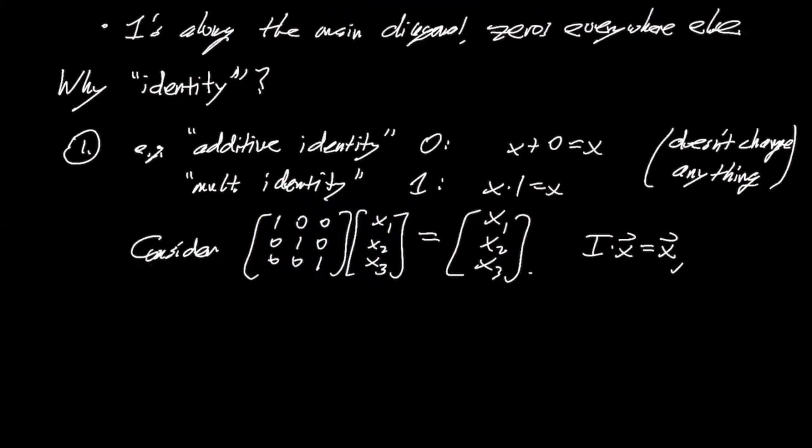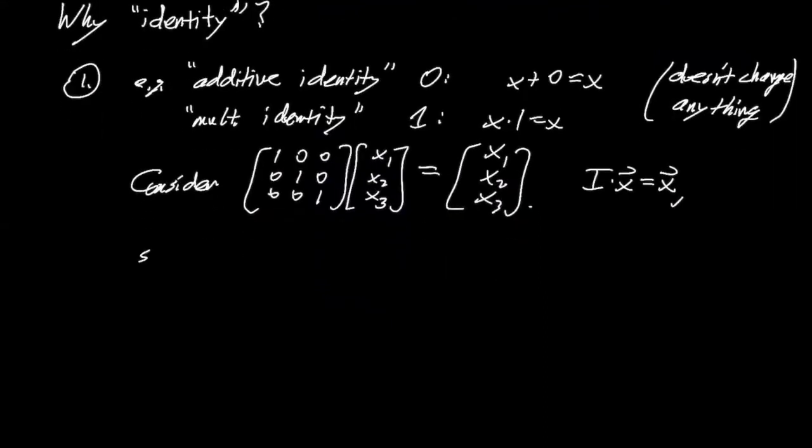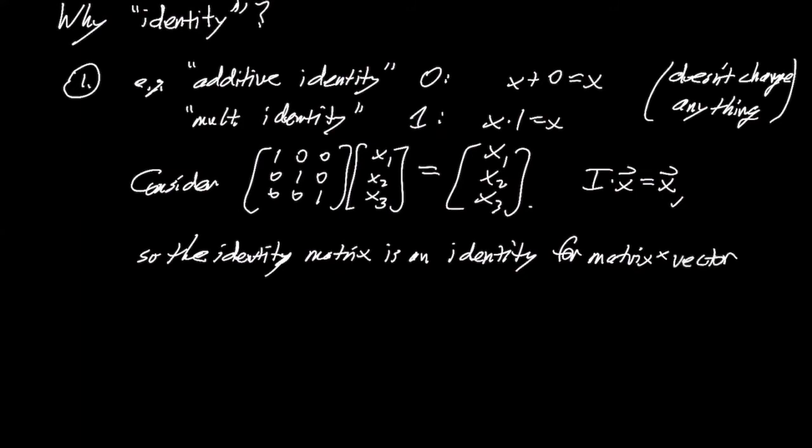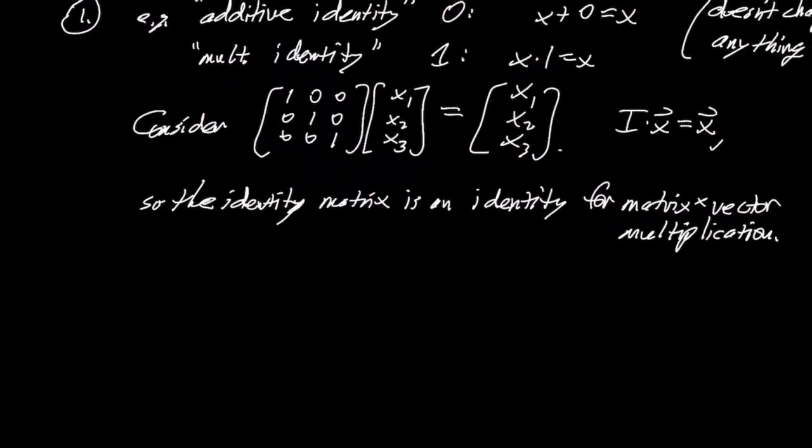So i.e., in other words, like I times the vector x equals the vector x. So the identity matrix is a multiplicative identity. It's an identity for matrix multiplication or for matrix times vector multiplication. It's certainly, we just saw that it's an identity for that. Okay, so that's one reason.